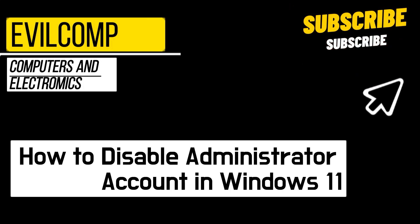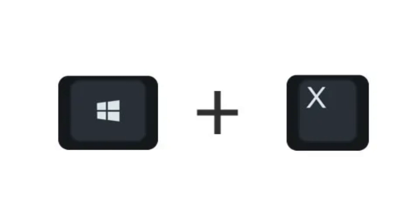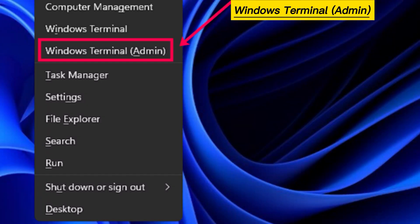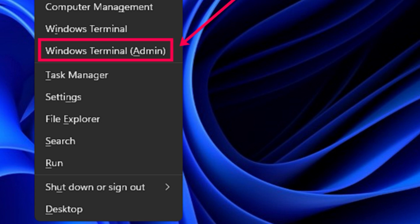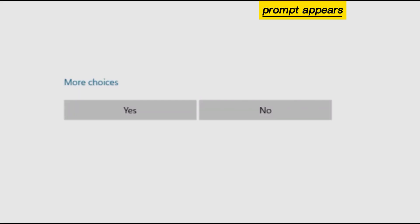How to Disable Administrator Account in Windows 11. Press the Windows key on your keyboard. Click Windows Terminal Admin. Click Yes when the User Account Control prompt appears.